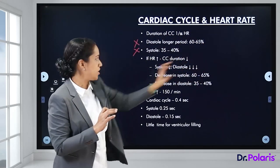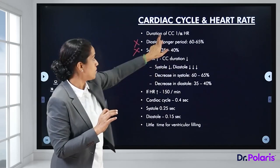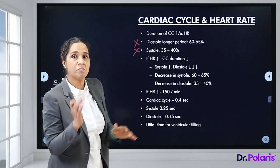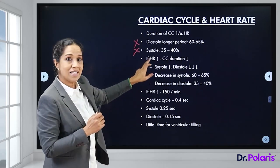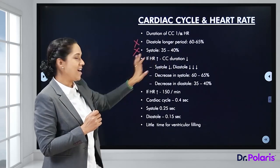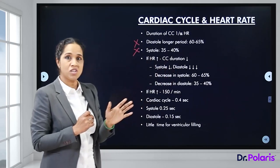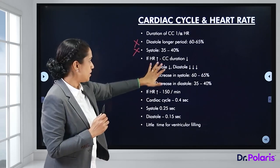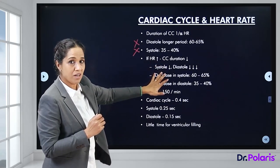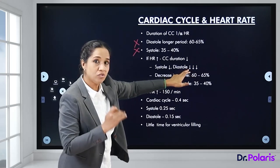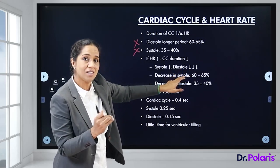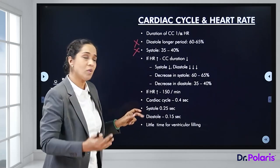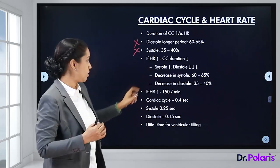When heart rate increases, both systole and diastole shorten, but diastole shortens to a much greater extent than systole. Specifically, the decrease in systole is only 35–40%, whereas the decrease in diastole is 60–65% of the total reduction.